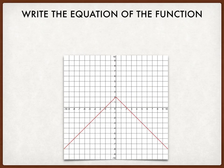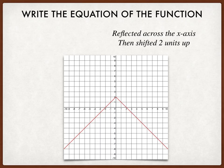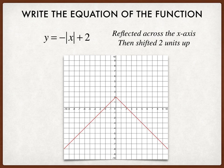Let's have another example. This one we can see is reflected across the x-axis. So there's going to be a negative sign out in front of the absolute value bars. And it's also shifted 2 units up from there. So there'll be a plus 2 outside of the bars. So this equation looks like y equals negative the absolute value of x plus 2.